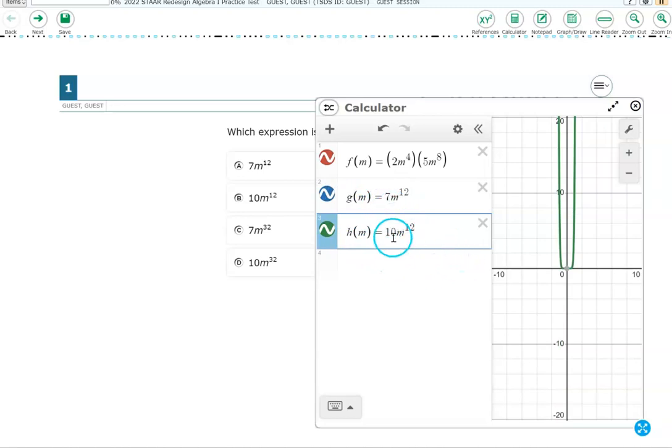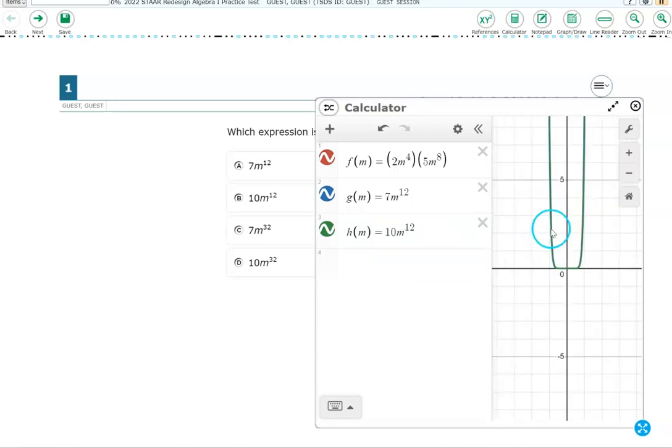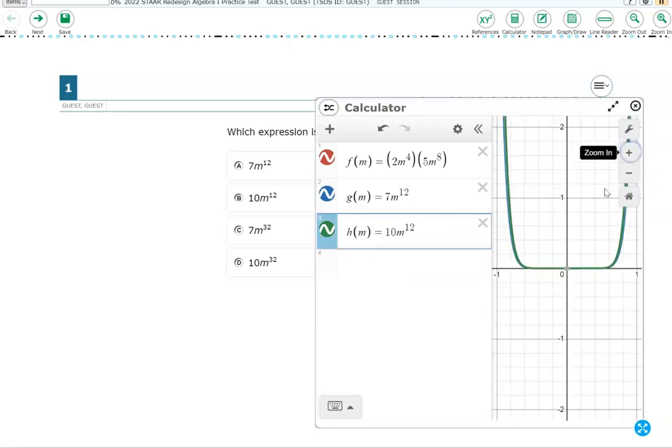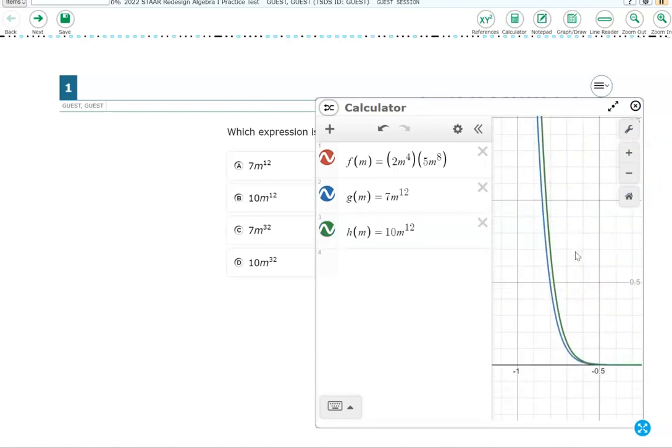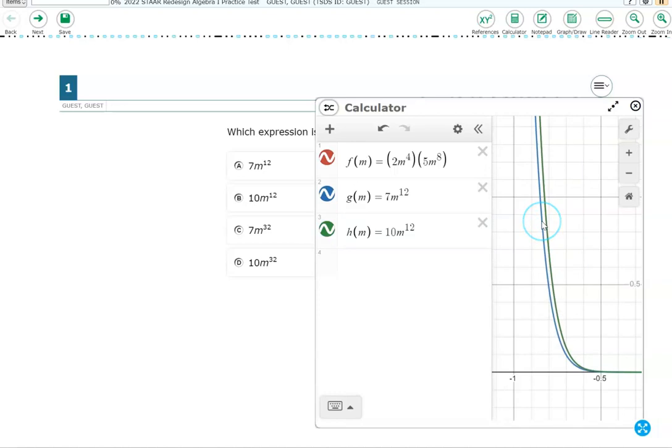I'm going to type this one. Let's call this one H of M. And this one is 10M to the 12th. See, they all look the same. But you know these aren't the same because one has a 7 and one has a 10. So which is it? Well, here's how we'll decide. Go ahead and zoom way in. Just keep zooming in. You can choose the little plus sign or use your mouse wheel. And eventually, you should start seeing different colors here. See this blue one? That's this one. But notice if you turn off the green one by clicking on that green button, that red one is right under it. So this H of M function that I typed, 10M to the 12th, is equivalent to the original. So the correct answer is B.